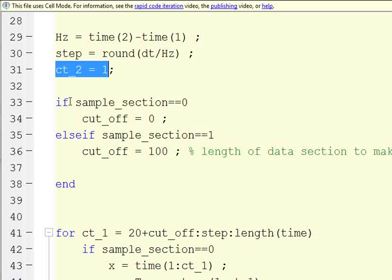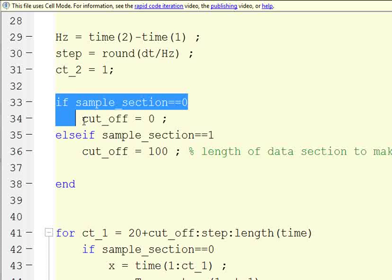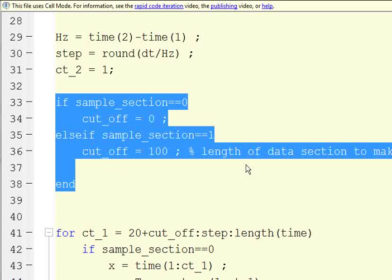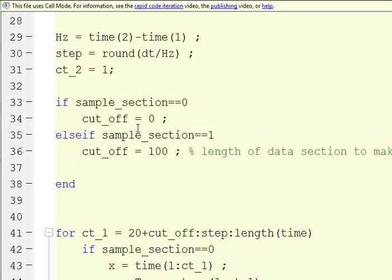So we have a conditional statement here that we're going to use. If sample section is zero, then our cutoff is zero. If sample section is one, then we're going to set it to a hundred.